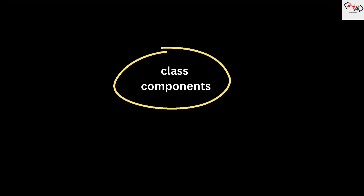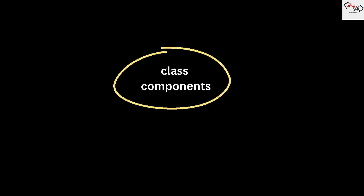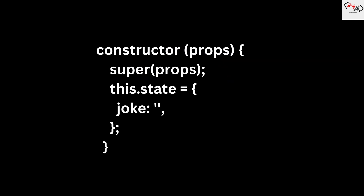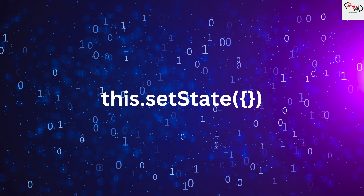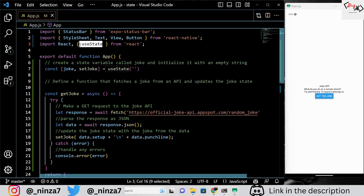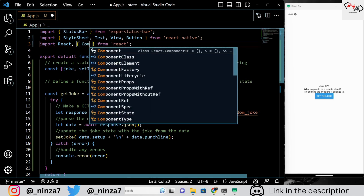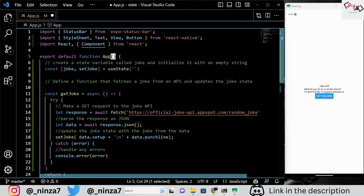If you are using class components, which are an older way of writing React components, you can use the constructor and this.state to initialize your state object. Then you can use the this.setState method to update your state object with new values. The code for the same joke app using a class component would look something like this.